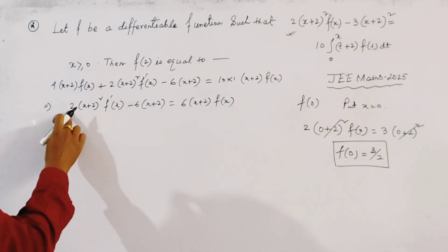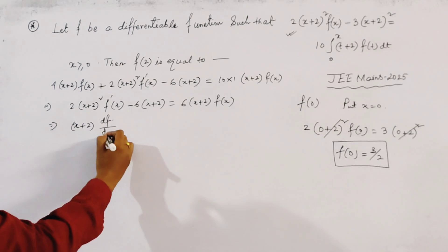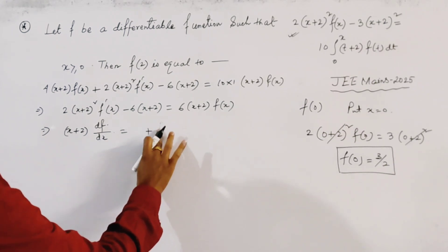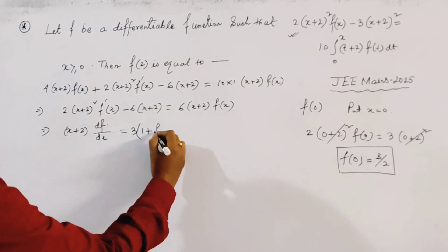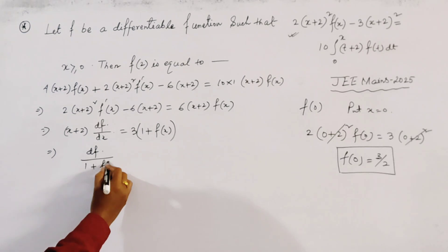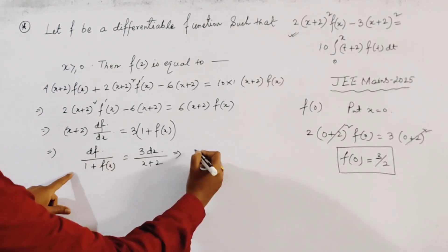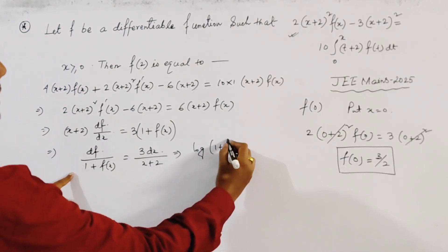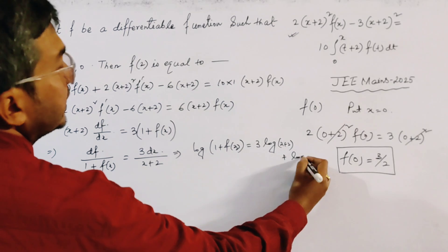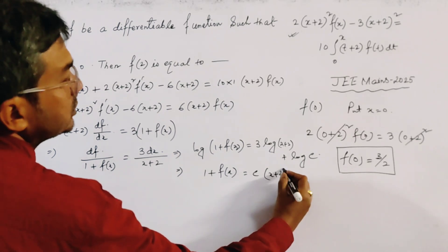We cancel 2(x+2) from both sides to get (x+2)·f'(x) = 3 + 3·f(x), which we rewrite as df/(1+f(x)) = 3·dx/(x+2). Integrating both sides gives log|1 + f(x)| = 3·log|x+2| + log c, so 1 + f(x) = c·(x+2)³.